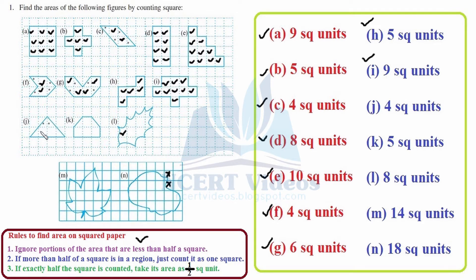For part J, we can see diagonals crossing — each pair of halves makes one. Counting: one, two, three, and four — that is 4 square units. For part K, half and half makes one pair. Counting: two, three, four, and five — thus 5 square units.